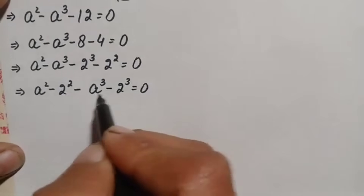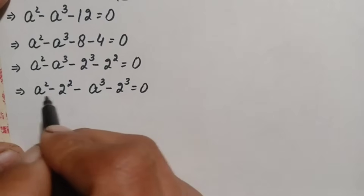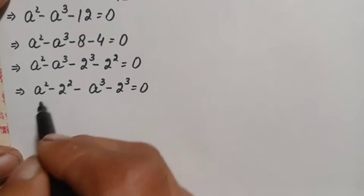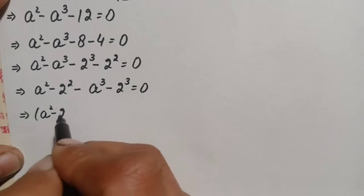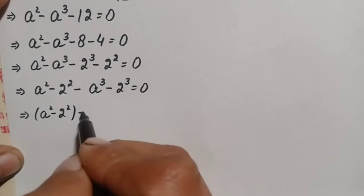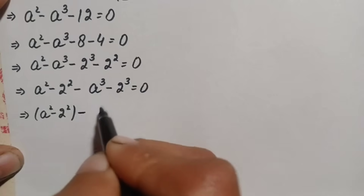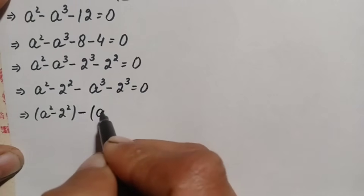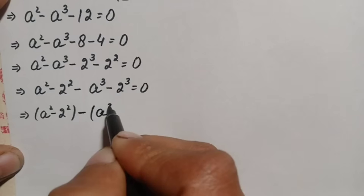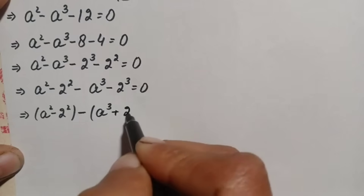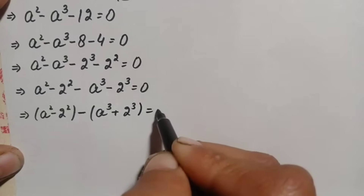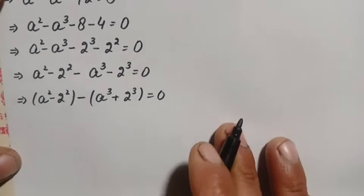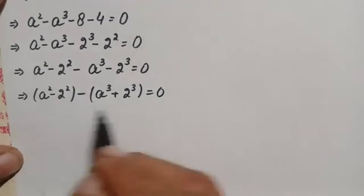From the squared terms we factor out what remains, and we take negative common from the cubic terms. This gives us a squared minus 2 squared, minus negative of a cubed plus 2 cubed, equals zero.